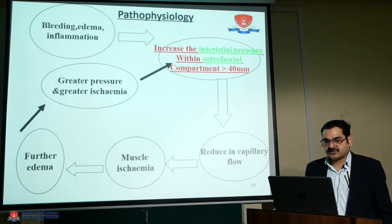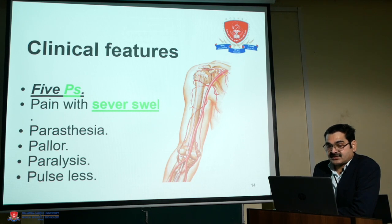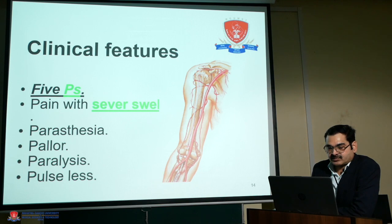This is the pathophysiology of compartment syndrome. Because of edema and ischemia, a vicious cycle develops leading to necrosis of the muscle. Clinically, the features are: severe pain, paresthesia and numbness due to compression of nerves, pallor due to ischemia and compression of vessels, paralysis with difficulty in movements, and pulselessness — where the pulse becomes feeble in the distal part of the limb.